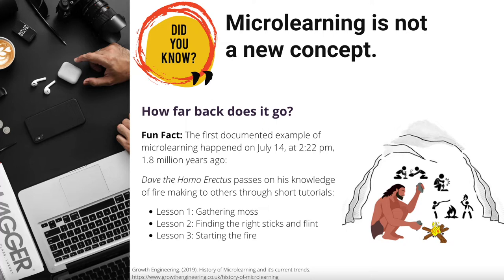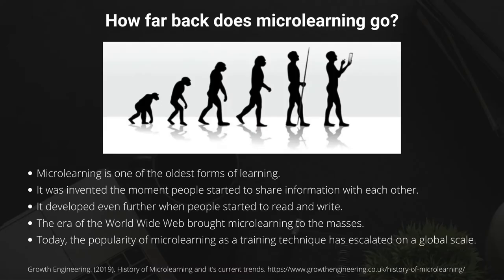We can envision what the first three tutorials might have looked like: lesson one, gathering moss; lesson two, finding the right sticks and flint; and lesson three, starting the fire. If you think about it, microlearning is one of the oldest forms of learning. It was invented the moment people started to share information with each other, and it developed even further when people started to read and write. The era of the World Wide Web brought microlearning to the masses.